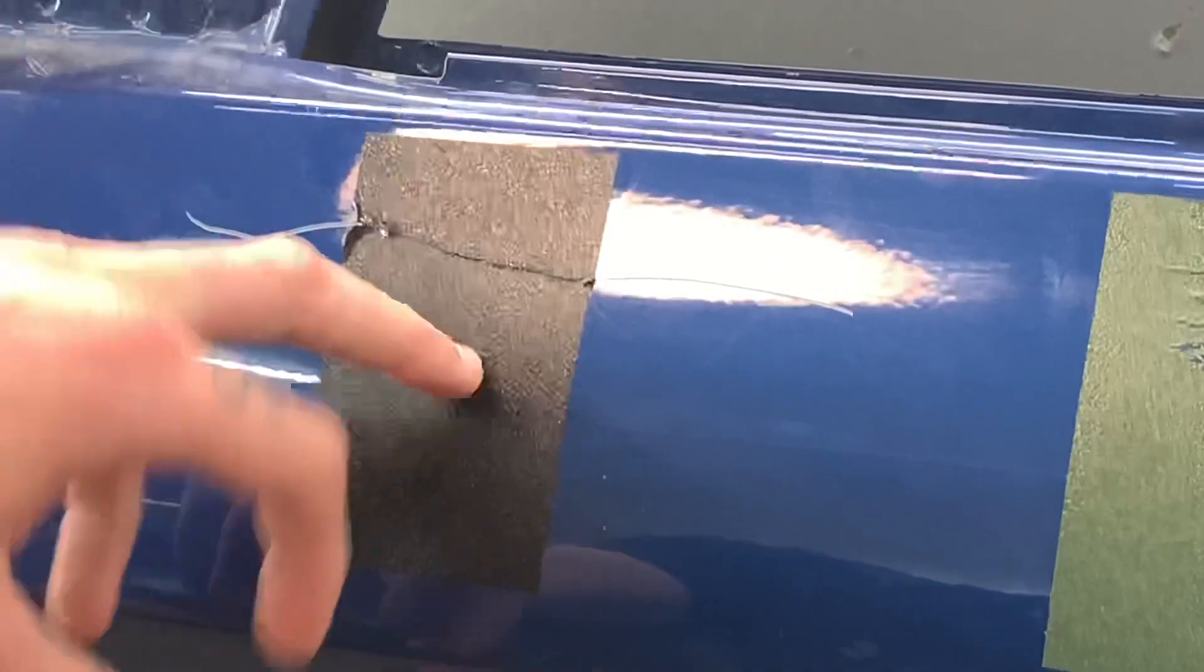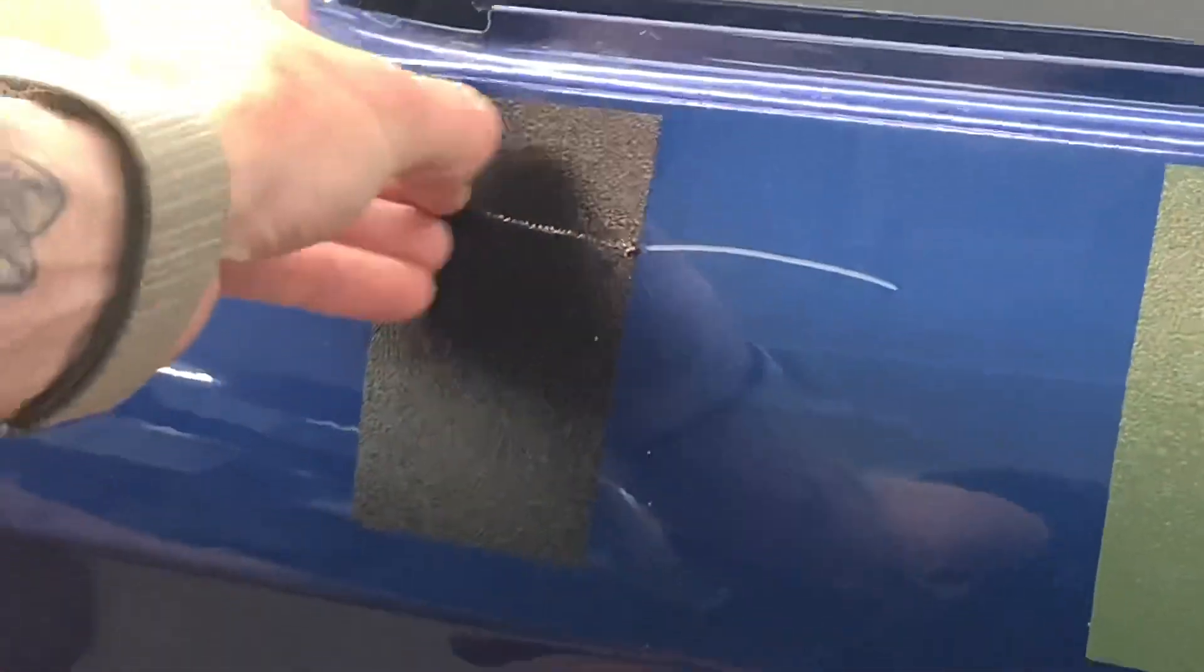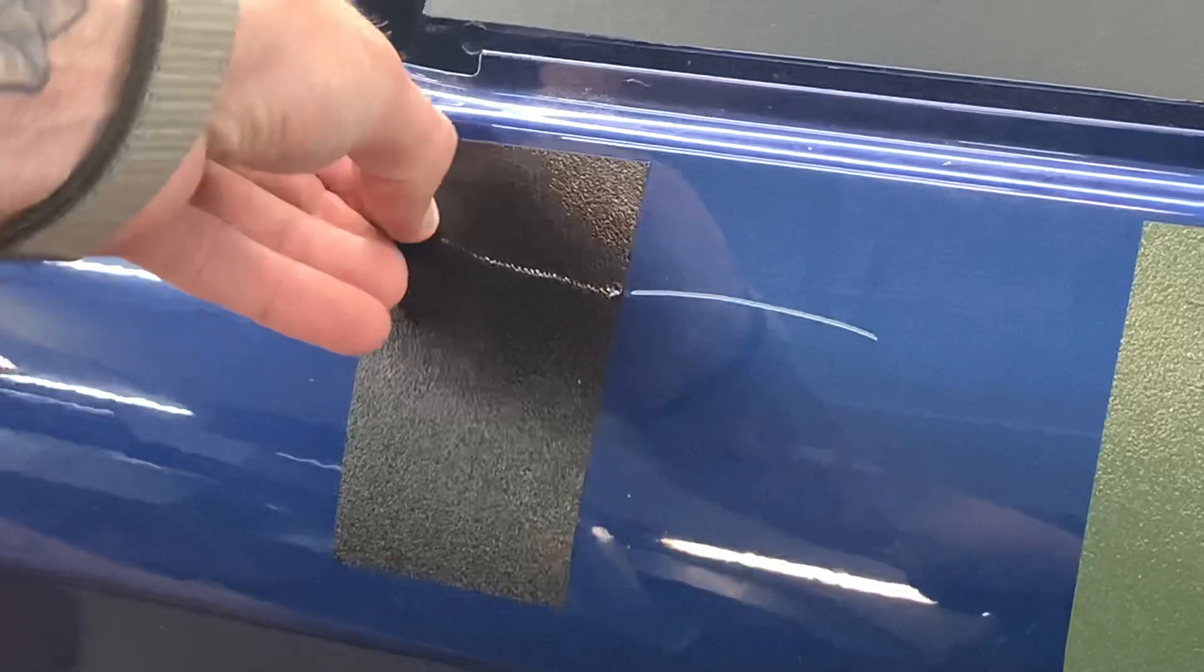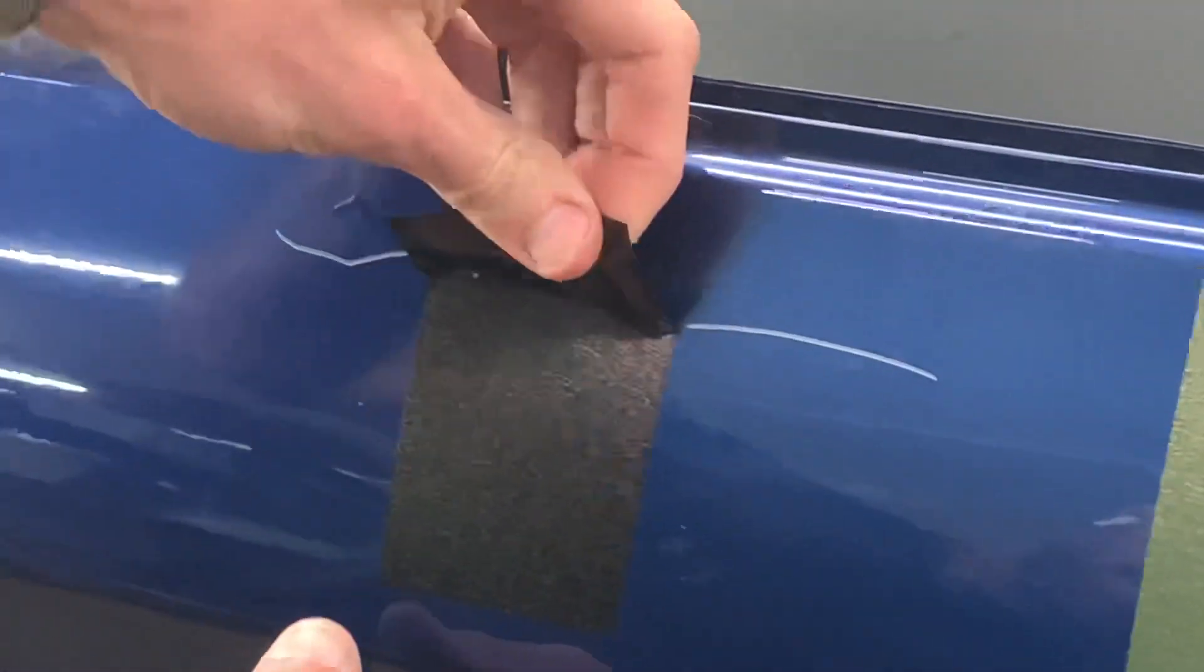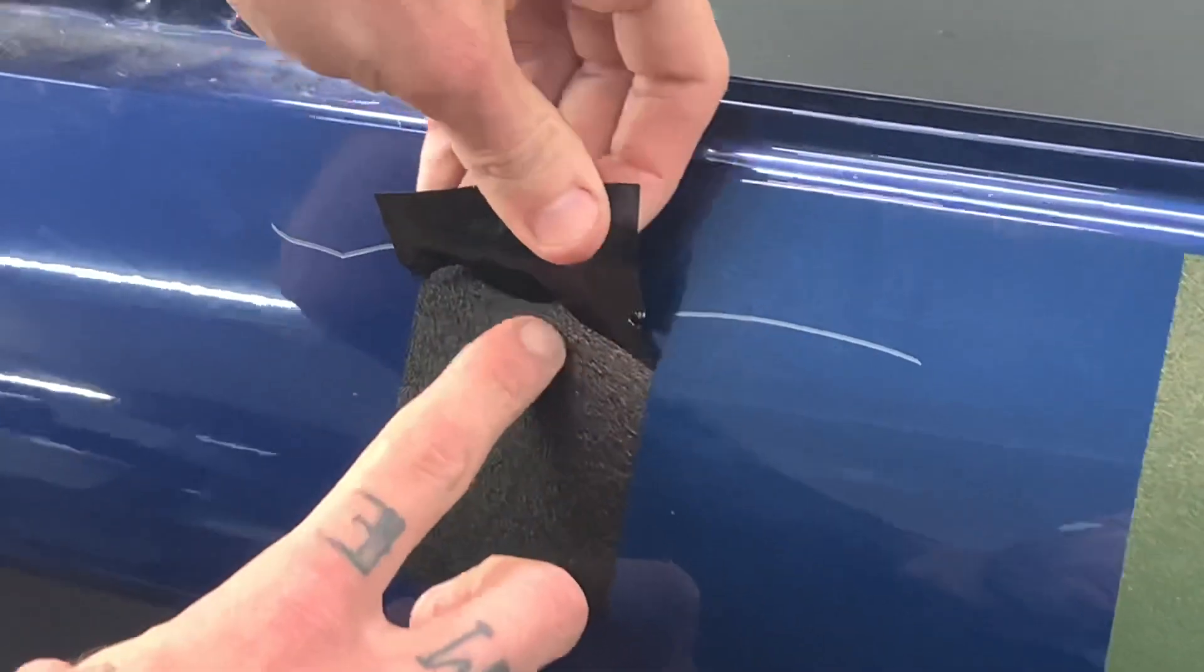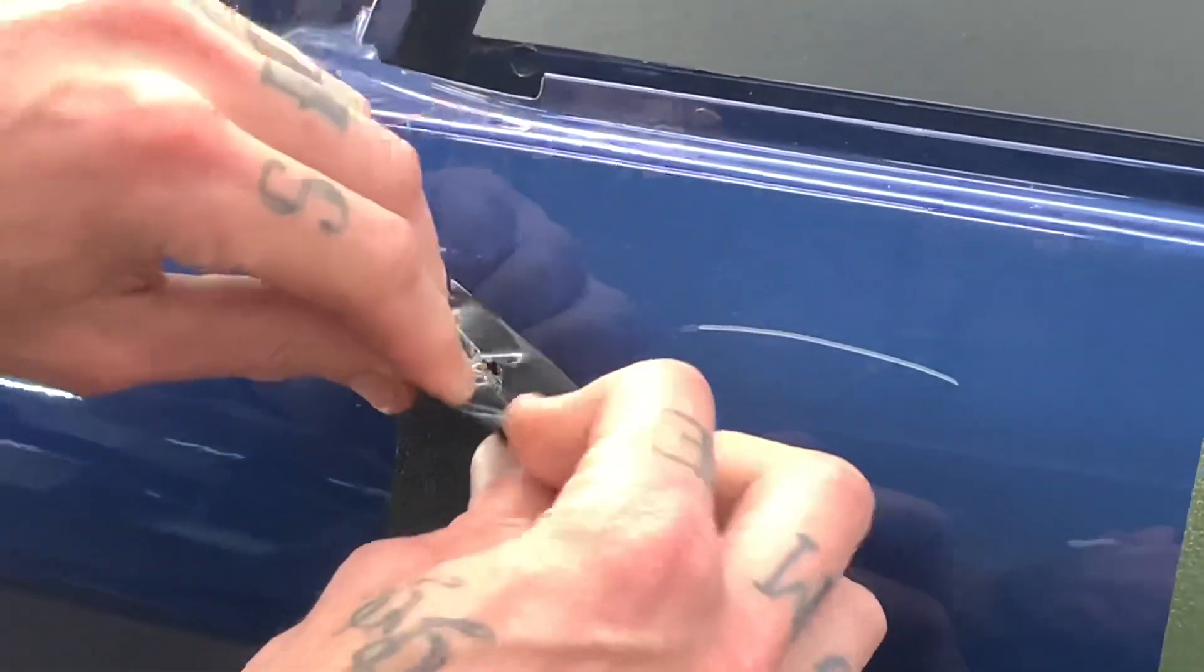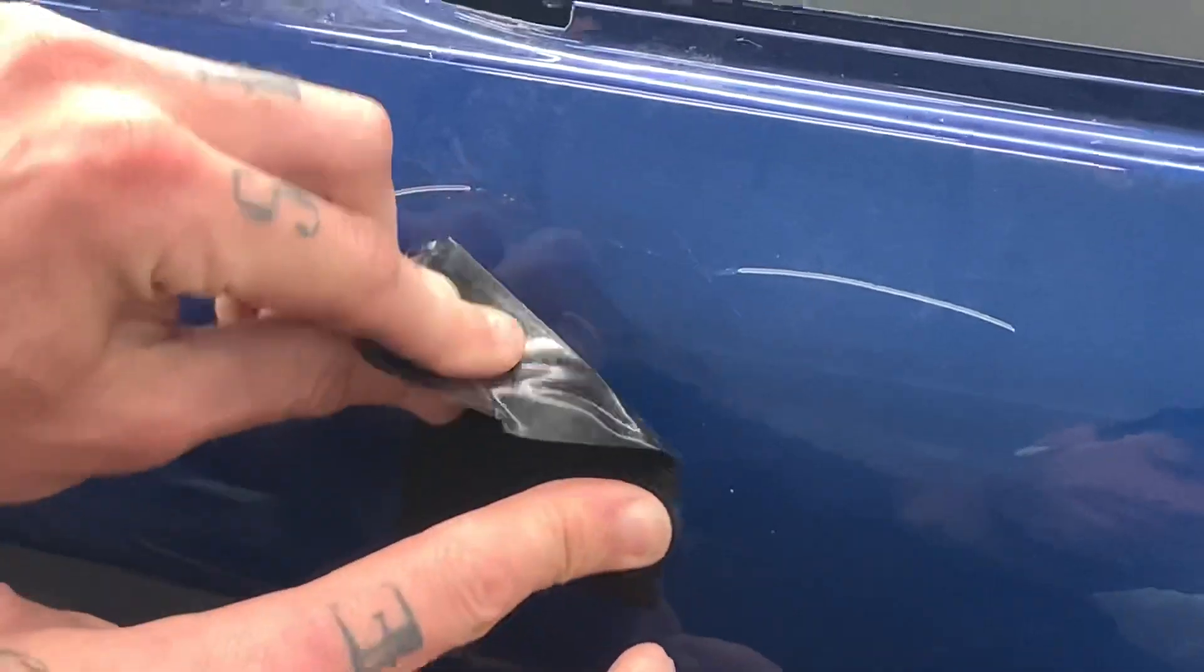Alright, so first up we had our key. Let's peel that out and see what we got underneath. The wrap is still holding fairly well together. As you can see, there's minimal damage to the paint. None actually. The material is somewhat folding up.